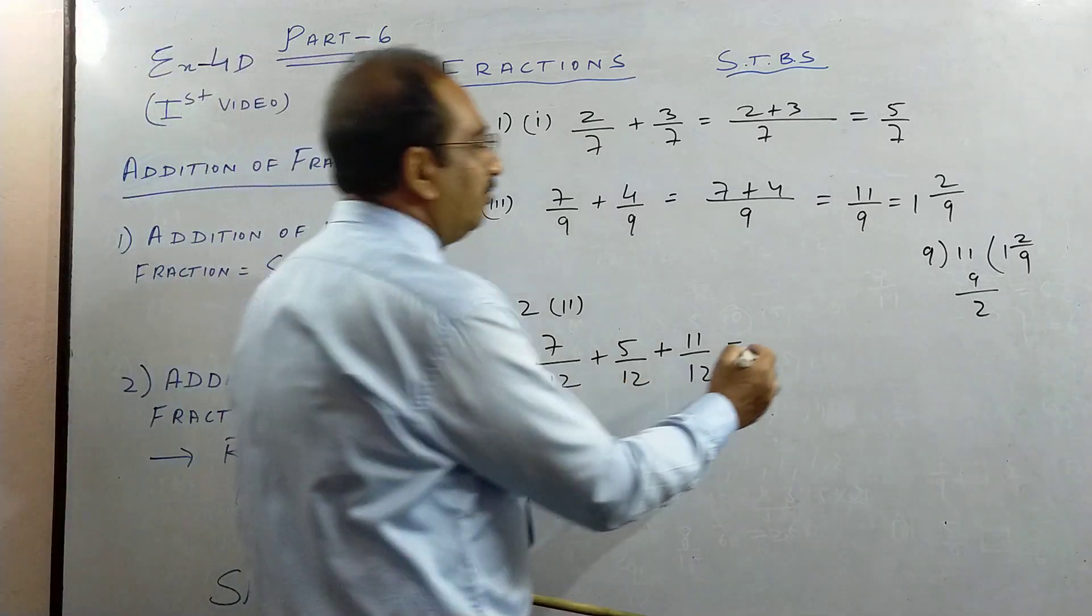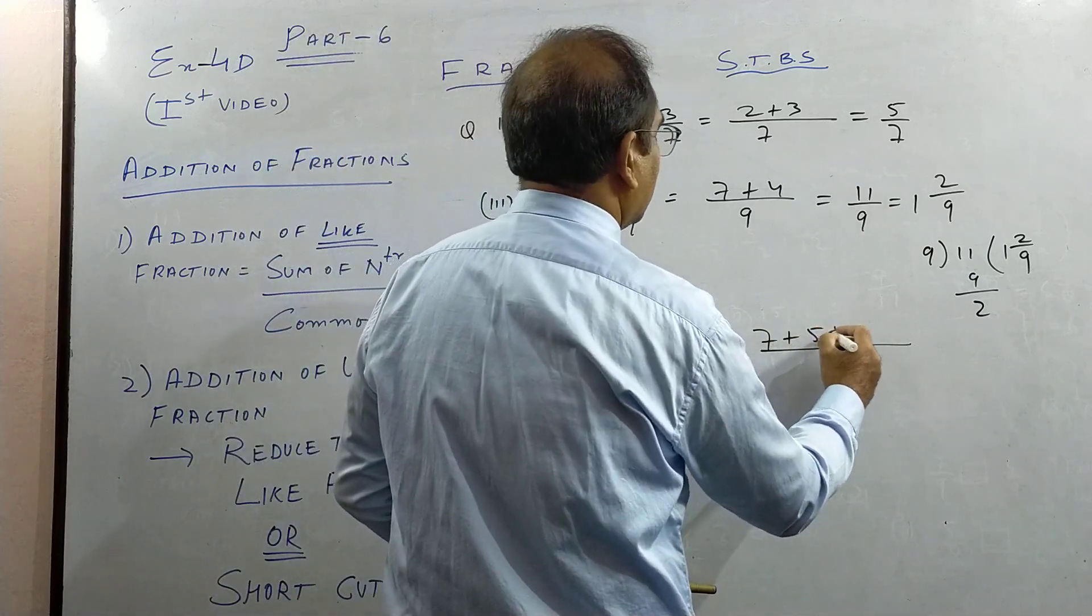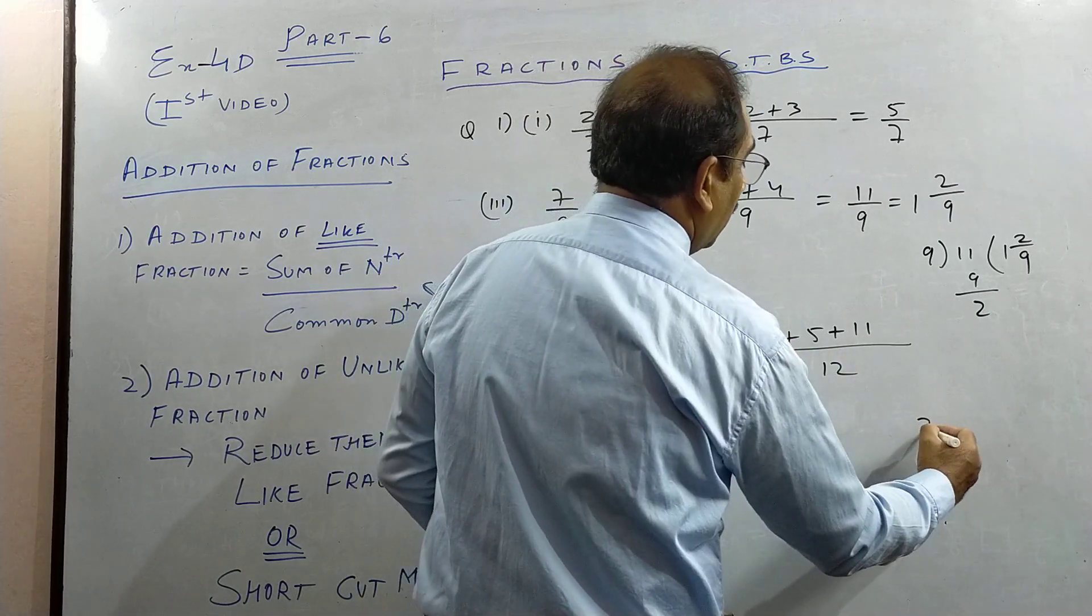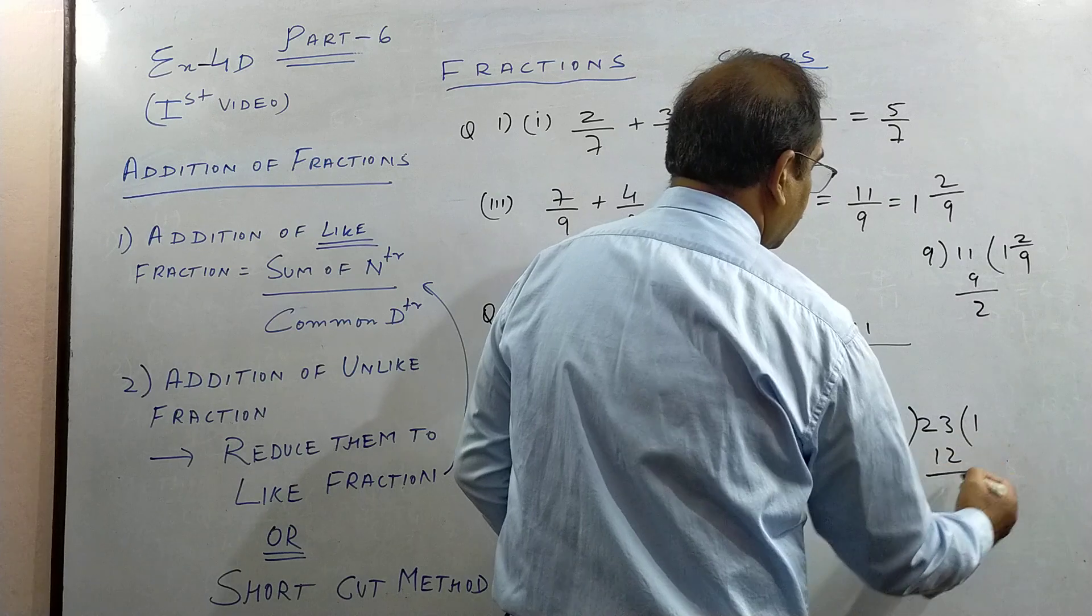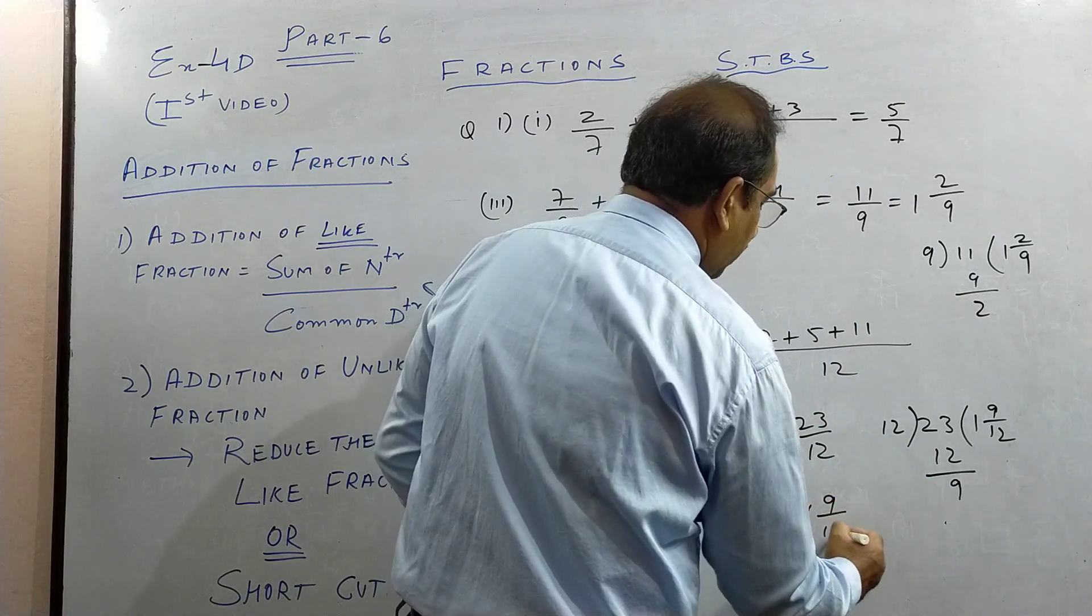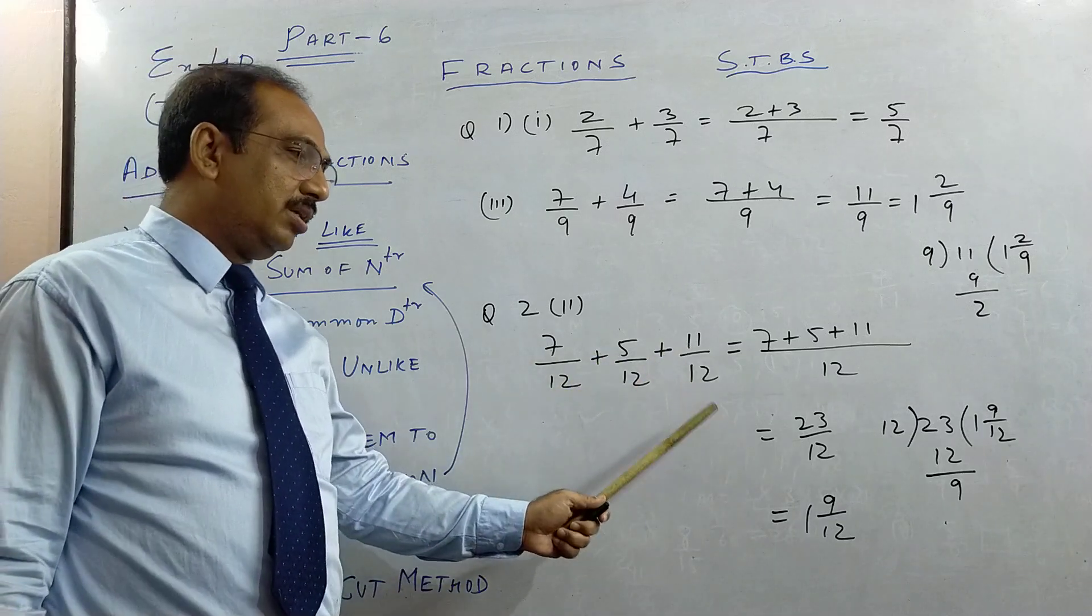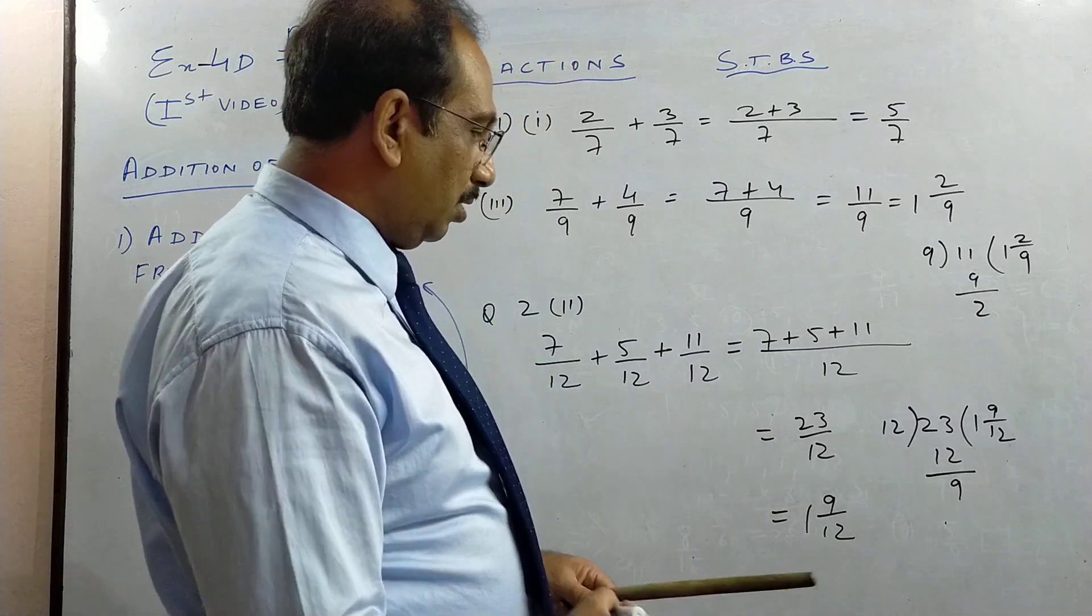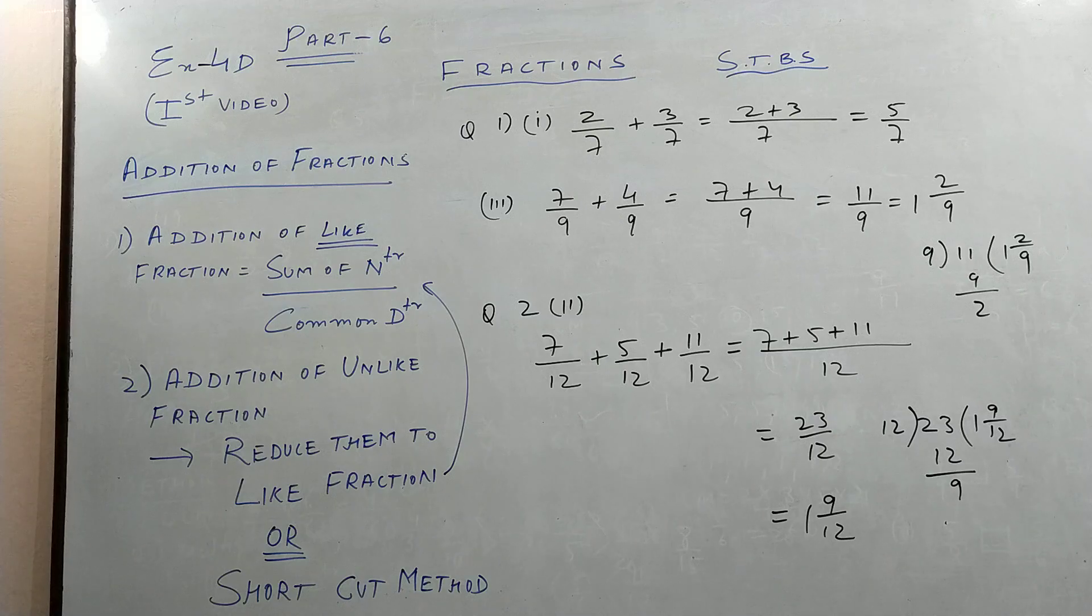If it is improper, convert it to mixed. Now this second one also is here, addition of like. So here we have 12. So write 12 common denominator, add the numerator. So how much we get children? 7 plus 5 is 12, 12 and 11 is 23 by 12. Again, change this into mixed fraction.